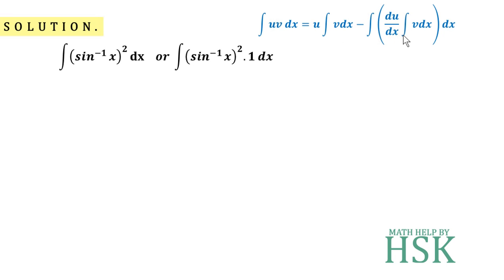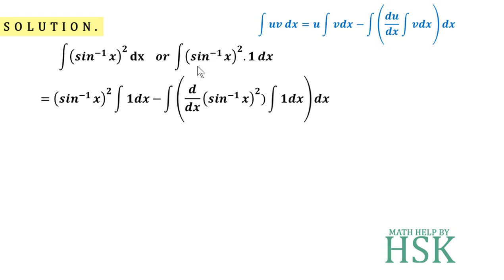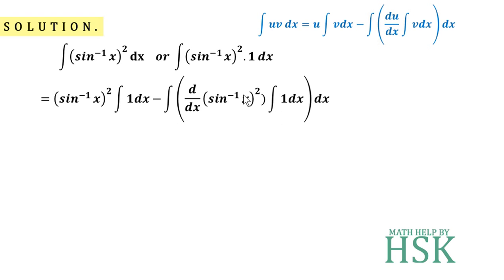This is the formula of integration by parts for reference. Applying the formula, this expression can be written as (sin⁻¹x)² into the integration of 1 — that is the first function times the integration of the second function — minus the differentiation of (sin⁻¹x)² times the integration of 1, and further the integration of the product. The integration of 1 is x, so we write x in both places.